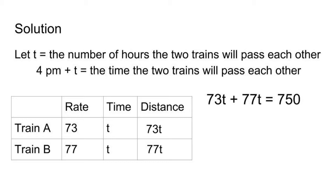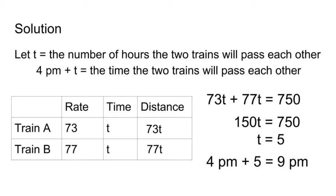Simplifying, we have 150t equals 750. Divide both sides by 150. t is equal to 5. And the time is 4 p.m. plus 5 equals 9 p.m.